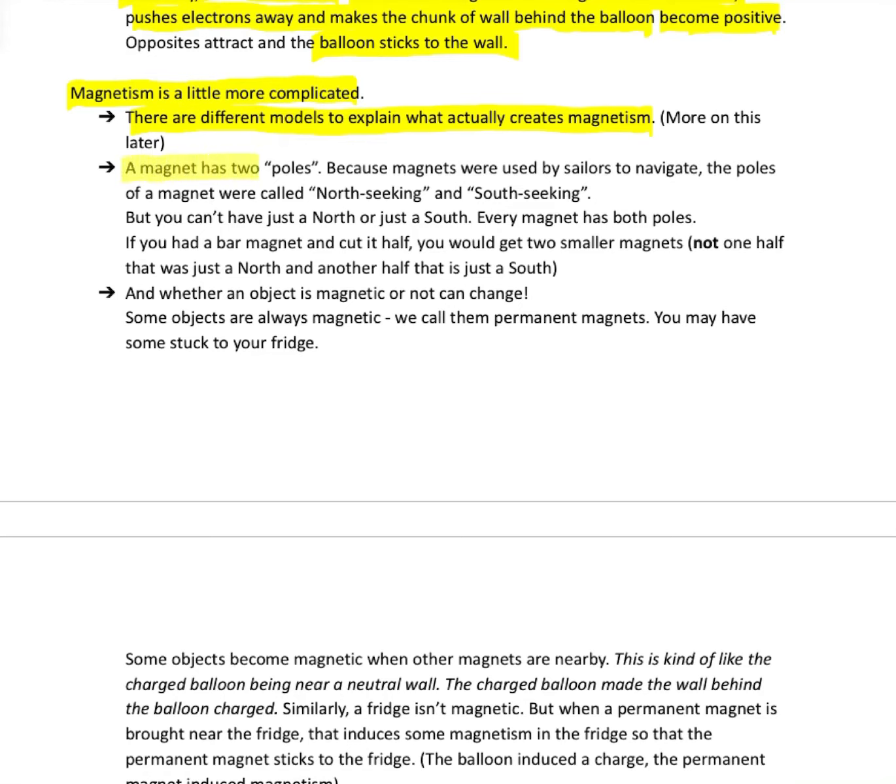Whatever model we use, magnets always have two poles, two opposite ends. Historically, magnets were used to navigate. So they used navigational terms to describe the two ends of a magnet. They called them North Pole and South Pole. They could have called them positive and negative, but that didn't really make sense for the application they were using the magnets for. They were using them to navigate, know where North was and South was. So they called the two ends of a magnet, North Seeking and South Seeking.